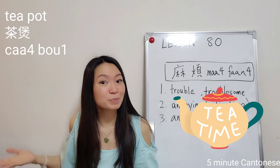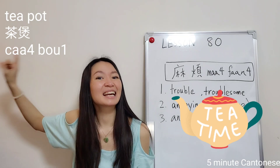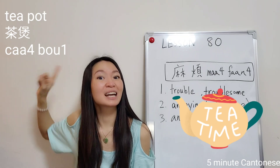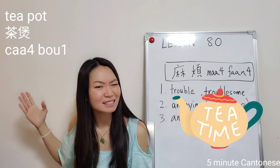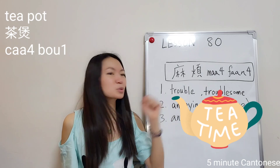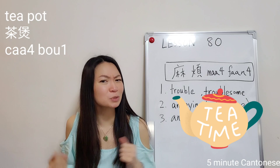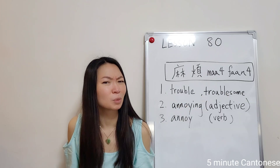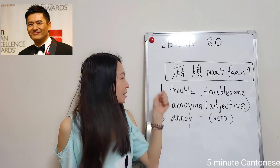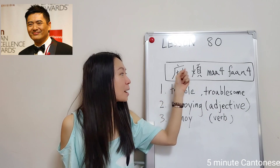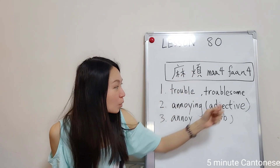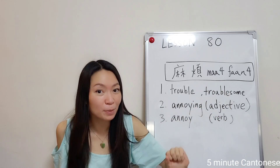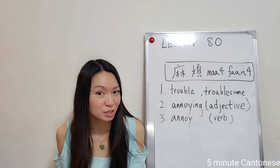Why? Because 茶包 sounds like 'trouble.' So he used this word related to women. Chao Yun-Fan is right — literally, 麻煩 means 'trouble' as a noun, or 'troublesome' as an adjective.